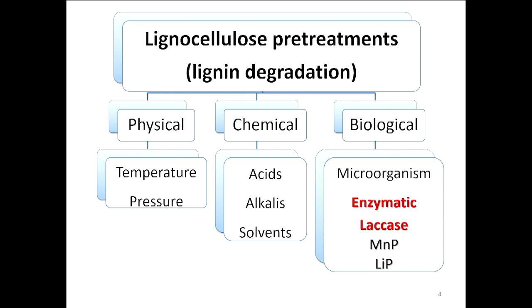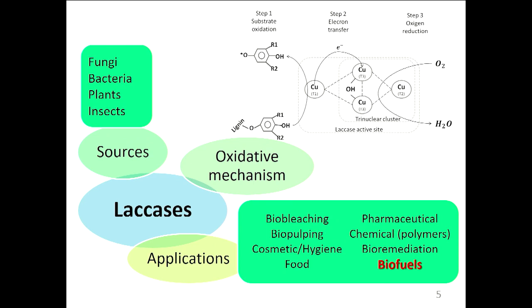My work focuses on the use of laccases. Laccases are oxidative enzymes found in many different kinds of organisms, but the ones used for lignocellulose degradation are fungal and bacterial laccases. One advantage of laccases is that they oxidize many different kinds of phenolic and non-phenolic substrates by reducing oxygen to water, so we don't have contaminant or hazardous bioproducts derived from the oxidation reaction. This is why laccases have become very important in biotechnology and have found application in many different kinds of industries. But my work focuses on the degradation of lignin by laccases in order to produce biofuels.